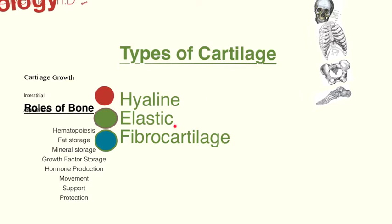The next type is elastic cartilage. Elastic cartilage is found in some of the more flexible regions of the body, primarily your internal and external ear and your epiglottis. It contains elastic fibers, which give the flexibility to elastic cartilage.